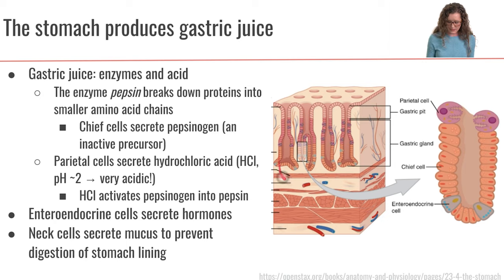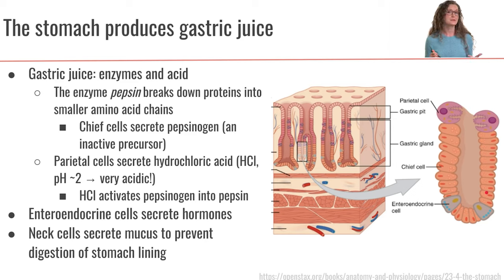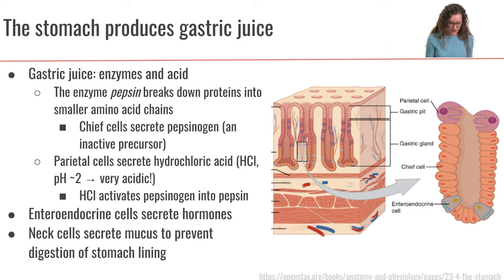In the lining of our stomach we also have cells called enteroendocrine cells, pictured over here. Enteroendocrine cells are going to secrete various types of hormones that are going to help regulate the process of digestion. We'll talk about those in a little bit more detail later in the lecture.